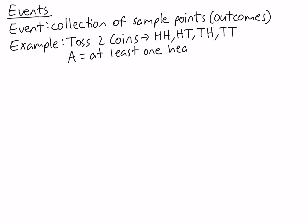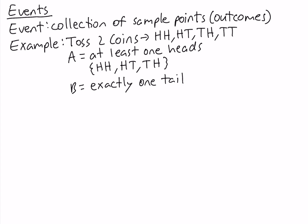Event A is made up of the sample points HH, HT, and TH — so there are three sample points in this event. Now let's define event B a different way. Event B is getting exactly one tail. Then the sample points in B are head-tail and tail-head. So essentially we can define an event any way we like.